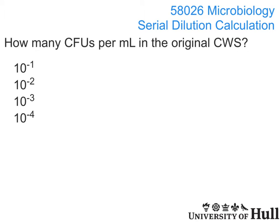In this practical, one of the things we want you to work out is how many colony-forming units there were in your original contaminated water sample. To do this, you're going to need to use the data from your spread plates and do a little bit of a calculation to work this out.